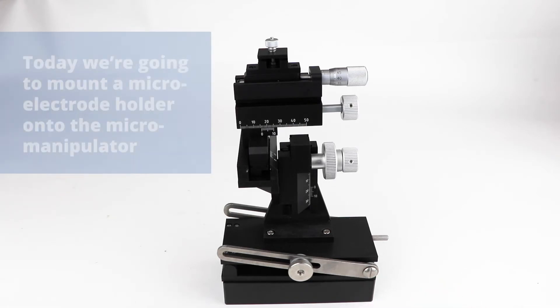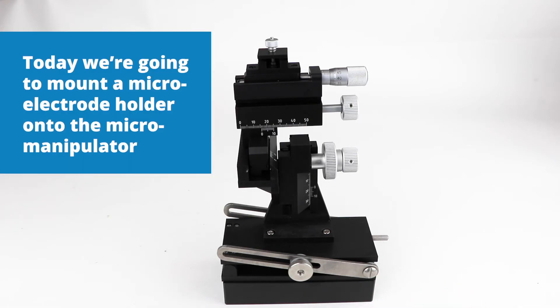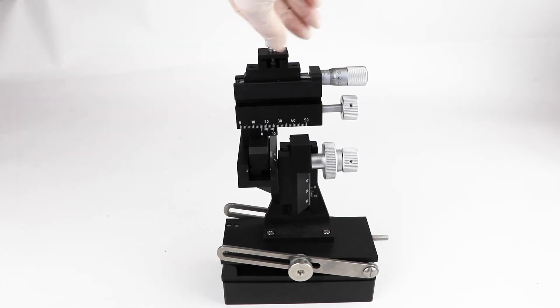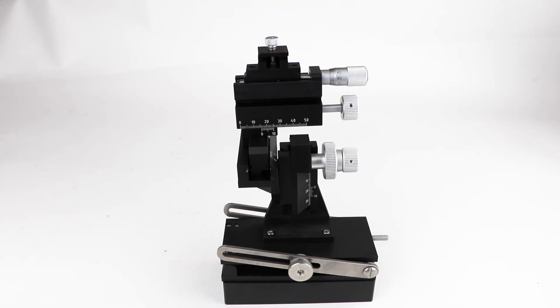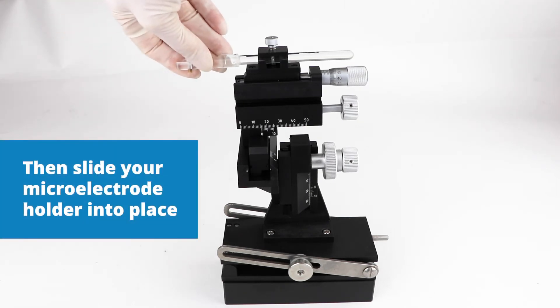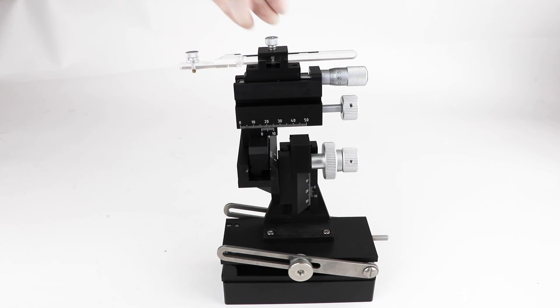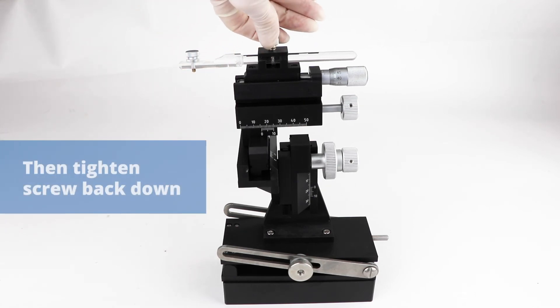Today we're going to mount the micro electrode holder on the micromanipulator. So to do that you loosen the top screw up here and you slide your micro electrode holder into it right about where you want it and you just tighten that down.